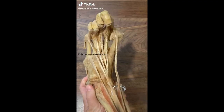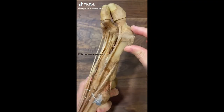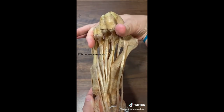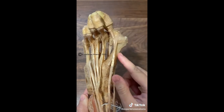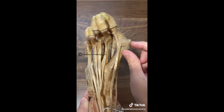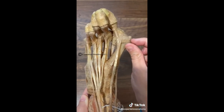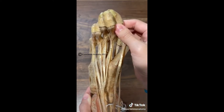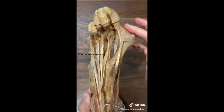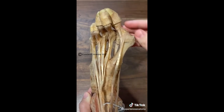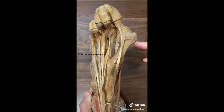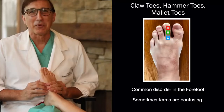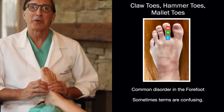In a video demonstration, a bunion shows how tight shoes create extra bone formation where the first metatarsal sticks out. It can also be genetic or anatomical, causing bones to get displaced with extra pressure at the big toe.